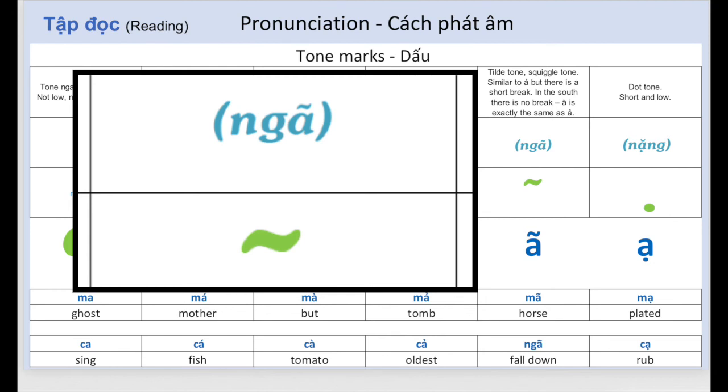In the south, there is no break. A with ngã sounds exactly the same as A with hỏi.